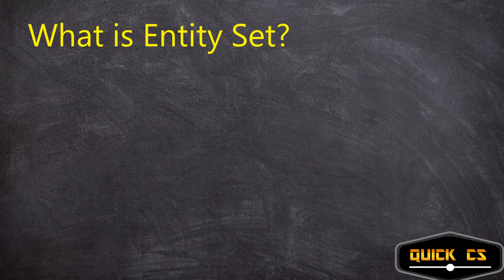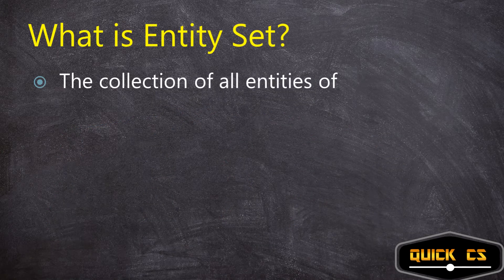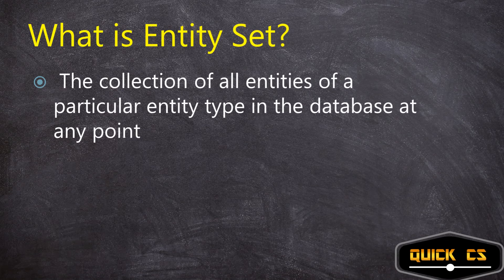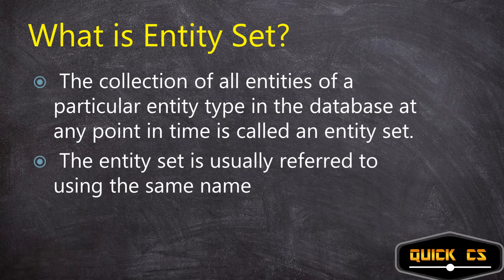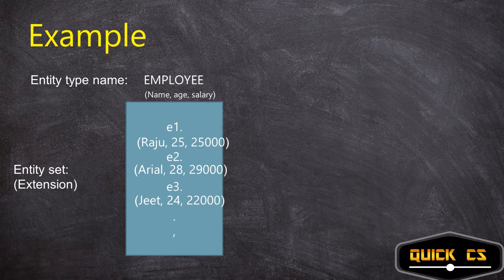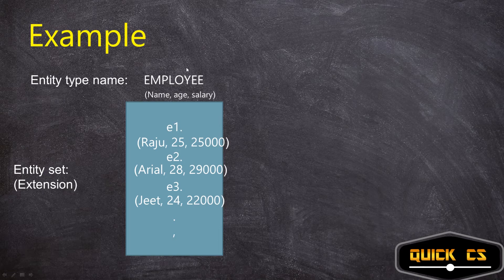Now, what is an entity set? The collection of all entities of a particular entity type in the database at any point in time is called an entity set. The entity set is usually referred to by the same name as the entity type, so don't get confused between entity set and entity type — they are essentially the same thing. The entity type name is 'Employee', with name, age, and salary as the three common attributes, and the entity set shows the actual values at that moment.